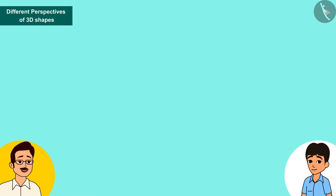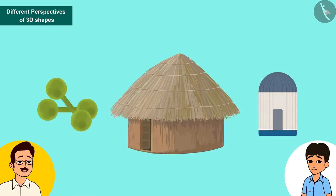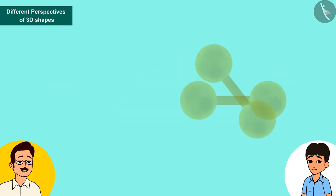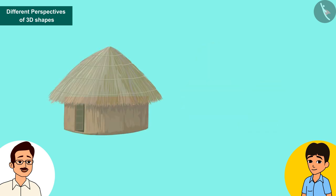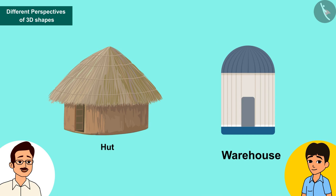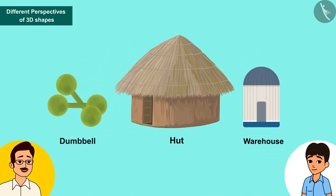Now Raghav's father shows him some more figures and asks if he can tell the names of the shapes. Raghav tells us that this is a dumbbell, it is a hut, and it is something like a warehouse. Well done!